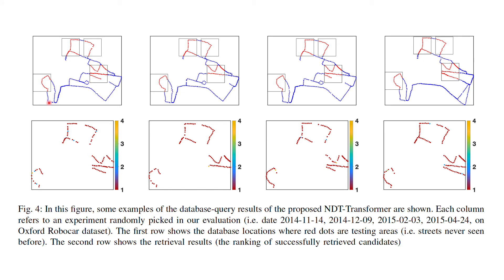Here are some qualitative results. The first row shows the training and testing split: the blue areas are used for training, and the red areas are for testing, which have never been seen before. The second row shows some retrieval results. We can see that most places can be recognized using the first retrieved candidate.